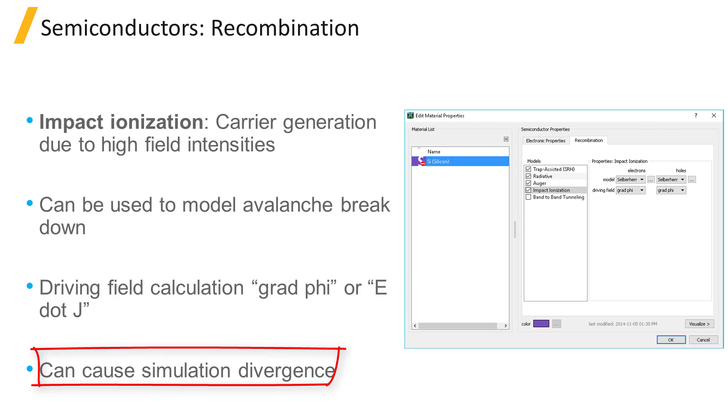Consequently, it is a highly non-linear process, and its inclusion in the physical model for the semiconductor can cause divergence in the simulation. By default, the impact ionization process is not enabled. When simulating avalanche breakdown, additional settings might be needed to ensure simulation convergence.